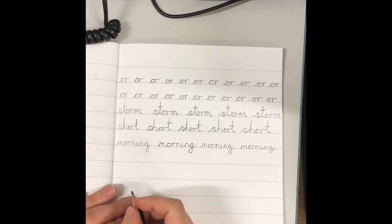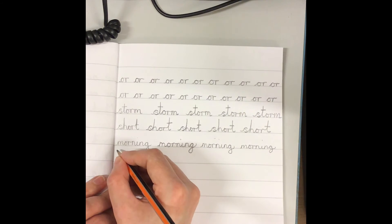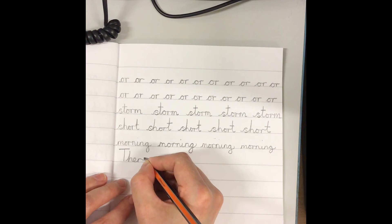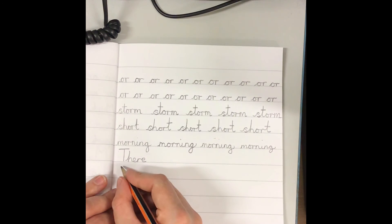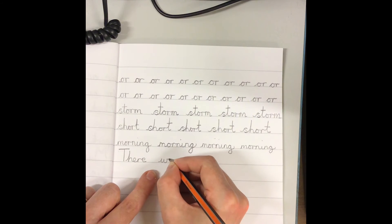So our sentence today is going to be, There was a short storm in the morning. It's a nice capital letter. Remember we don't join them. Tricky red word, there. This is a good chance to practice the word there. There. Finger space. Tricky word was.